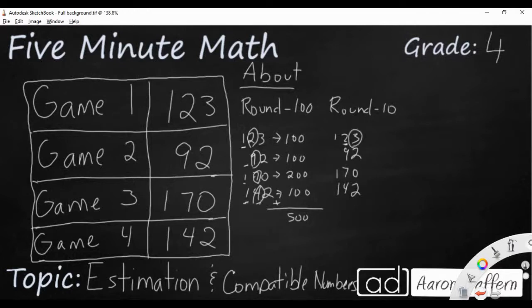Now we've got 123, it's closer to 120 than it is to 130. 92, definitely closer to 90 than it is to 100. 170 is already rounded to the tens place. That zero is not going to do anything. And then I've got 142. I'm going to say that it's closer to 140 than it is to 150. That two is not going to do much.